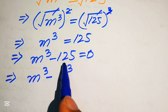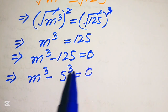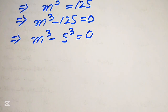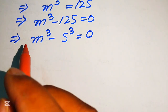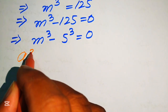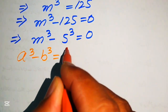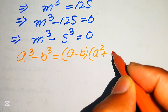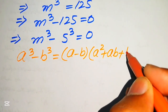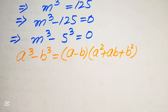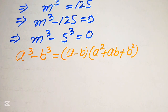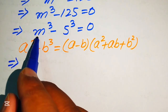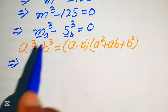We know that 5 cubed equals to 125, and this whole equation equals to 0. After this step we will apply the cubic formula. You know that if we have a cubed minus b cubed, it equals to a minus b times of a squared plus ab plus b squared. According to this cubic formula, we will expand our equation in this form. Here our a is m and our b is 5.